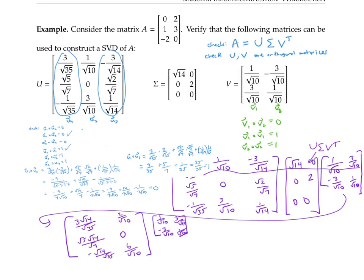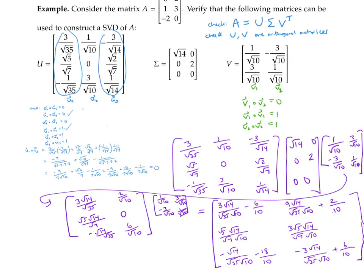I'll copy down the rightmost matrix and continue to multiply. After some serious radical simplification, this turns into zero, two, one, three, negative two, zero, which is indeed our original matrix A.